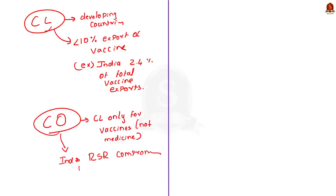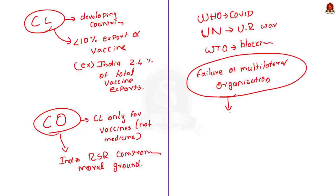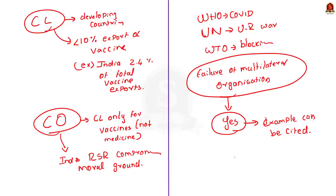India and South Africa initially asked for a complete waiver of IP rights to vaccines, medicines, and other medical products related to COVID-19, but the final compromise gave only compulsory licensing — and only for vaccines, not for medicines and medical products. According to the editorial's author, by accepting the EU's compromise outcome, both India and South Africa have compromised their moral ground. This information can also be used in mains answers on multilateral organizations' effectiveness, since WHO failed during COVID-19, the UN is powerless in the Ukraine-Russia war, and WTO is blocking access to affordable vaccines.